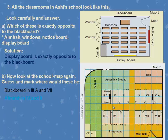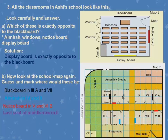For the almirah in Fourth and Tenth classrooms: the almirah is at the far corner exactly opposite the door. Mark it at that corner for Fourth and Tenth. For the notice board in Fifth and Sixth B: when you enter the door, the notice board is on the left side. Mark accordingly for Fifth and Sixth B. The last seat of the middle row in Second class will be at the far end of the middle row.